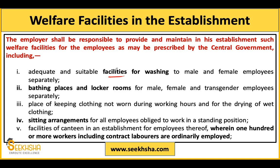Male, female, and transgender employees should have separate facilities. There should also be a proper sitting arrangement for employees, especially those who have to work continuously in a standing position. At regular intervals, they must be allowed to go and sit. Besides that, a canteen facility must be provided in every establishment where 100 or more workers are working - counting both permanent workers and contract laborers.